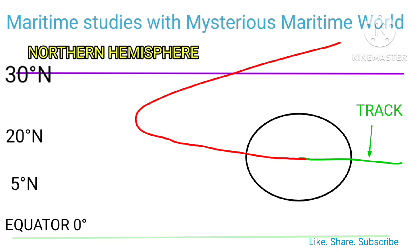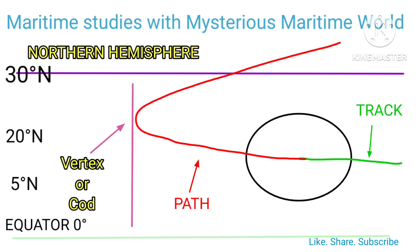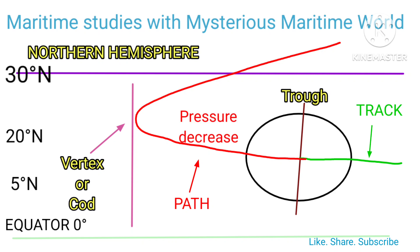Track is the route over which the storm center has already passed. Path is the predicted route over which the storm center is likely to travel. Vertex is the westernmost longitude reached by the storm center when recurving takes place; another name for vertex is 'cod.' Trough is the line drawn through the center of the storm at right angles to the track; ahead of the trough pressure falls, and behind the trough pressure rises.